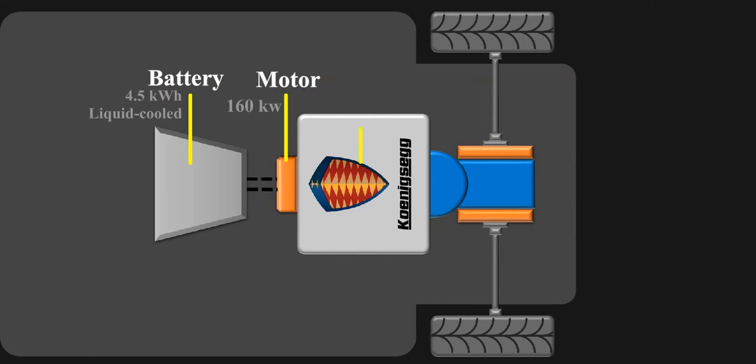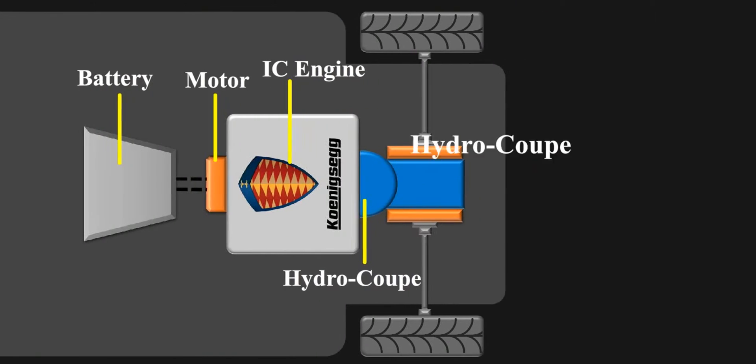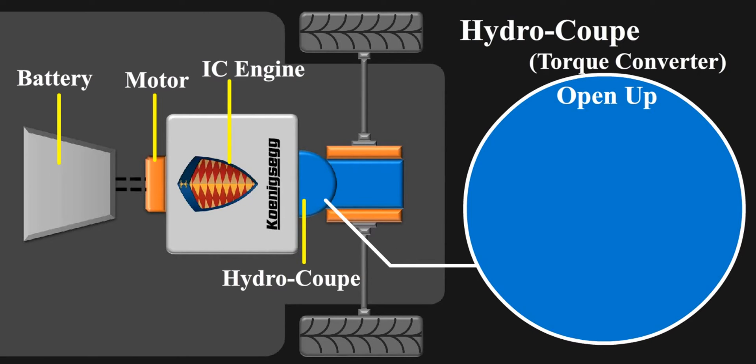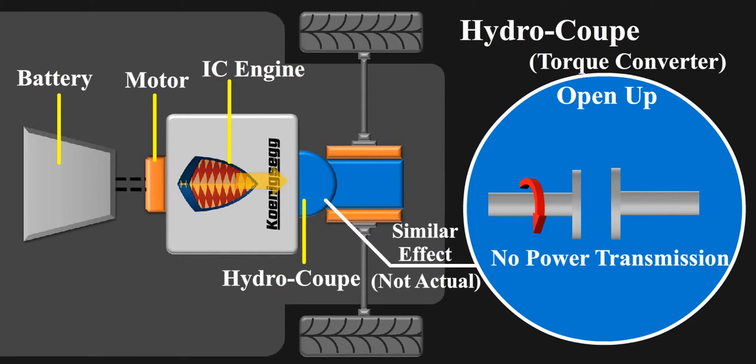Then after this, there is an IC engine which connects to the hydrocoupe, the most crucial part of the system. It is basically a torque converter which operates at 3 stages, first of which is open up. At this stage, the crankshaft rotates but the power does not transmit forward. There is 100% slip as the pressure built up is not allowed, so it's simply like declutching the engine from the powertrain.